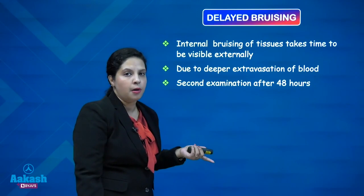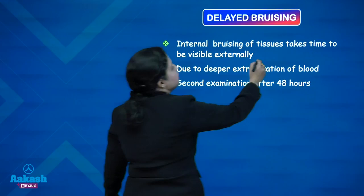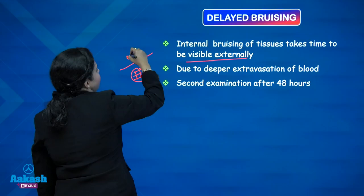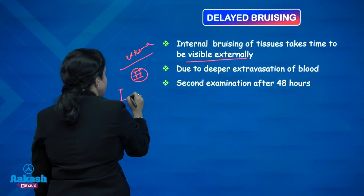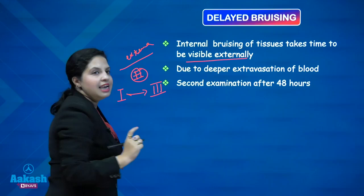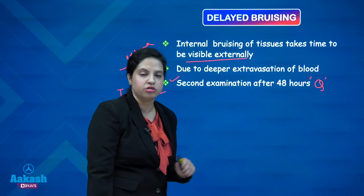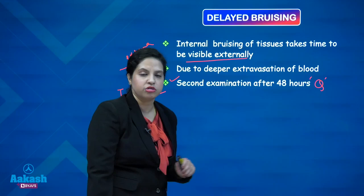Delayed bruising refers to internal bruising of tissues that takes time to be visible externally. The injury may have taken place on day one but is only appreciated on day three. The key clinical point is that if a delayed bruise is suspected, the patient should be asked to report after 48 hours so that a re-examination can take place.